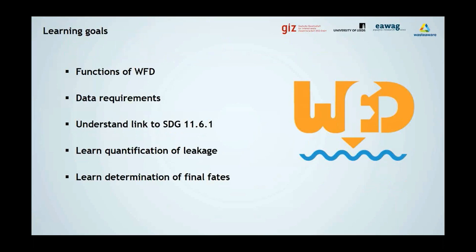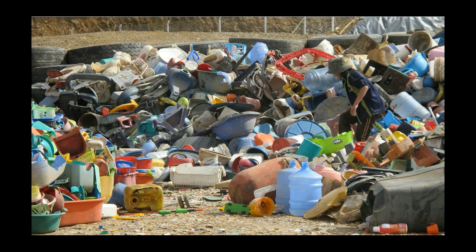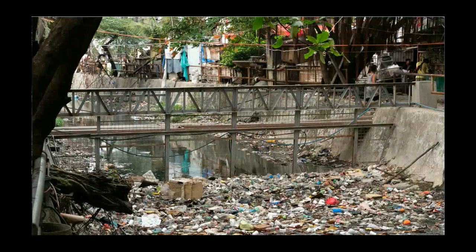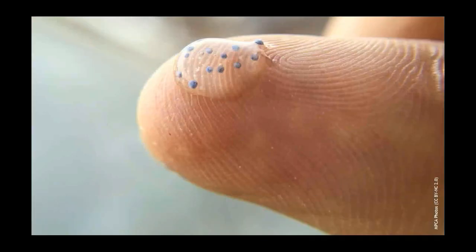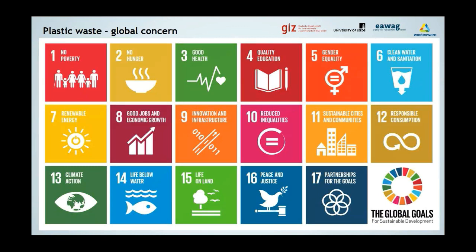Welcome to this presentation on the Waste Flow Diagram — a rapid and observation-based assessment tool to estimate plastic leakage. I'll guide you through the functions and data requirements of the tool. You will understand its link to SDG 11.6.1 and learn how it quantifies plastic leakages and determines their final fates. We are all aware of the global plastic pollution problem — it affects all ecosystems of our planet, degrades landscapes, causes severe danger to animals, blocks drains and waterways triggering flooding, and is already even present in our food chain.